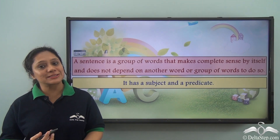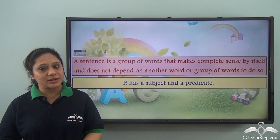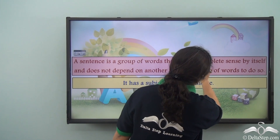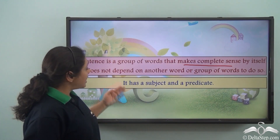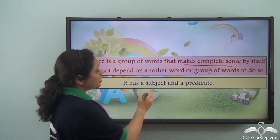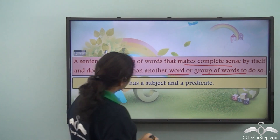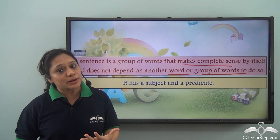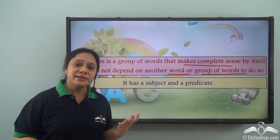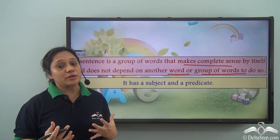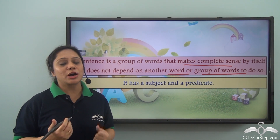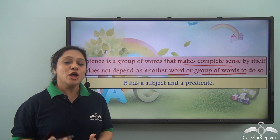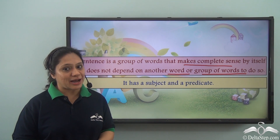You have already learnt about the sentence in great detail and you know that a sentence is a group of words that makes complete sense by itself and does not depend on another word or group of words to do so. It has a subject and a predicate. You have also learnt about the various kinds of sentences based on their structure. Today we'll do a quick recap of the various types of sentences based on structure and do lots of exercises regarding them.